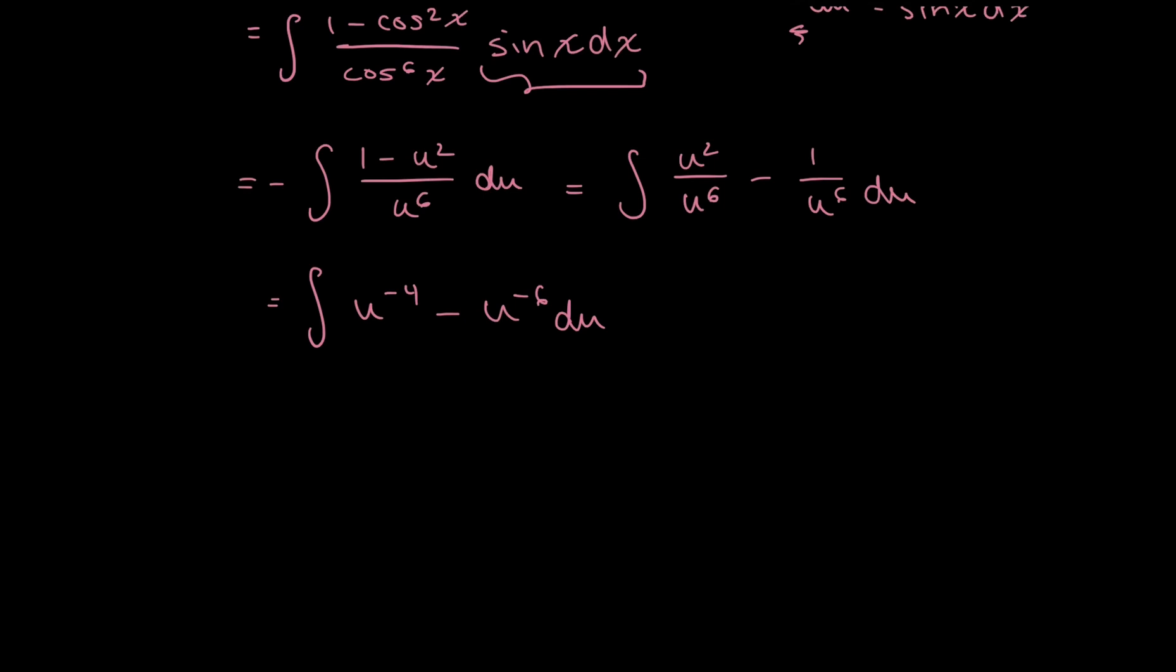So we all know how to use the power rule. You add 1 to the power and divide by that new power. So when I do integrate this, I'll have, instead of u to the negative 4 integrated, I'll have u to the power of negative 3. So I'm going to be multiplying by negative 1 over 3 times u to the power of negative 3. And then,